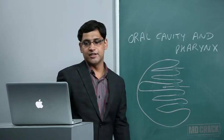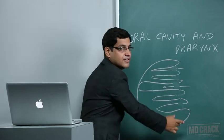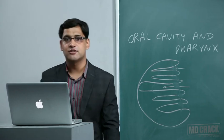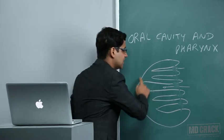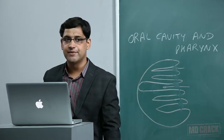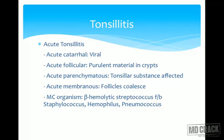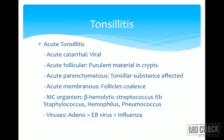The most common organism causing acute tonsillitis is beta-hemolytic streptococcus, followed by Staphylococcus, Haemophilus, and Pneumococcus. In viruses, the most common is adenovirus, followed by Epstein-Barr virus and influenza virus.